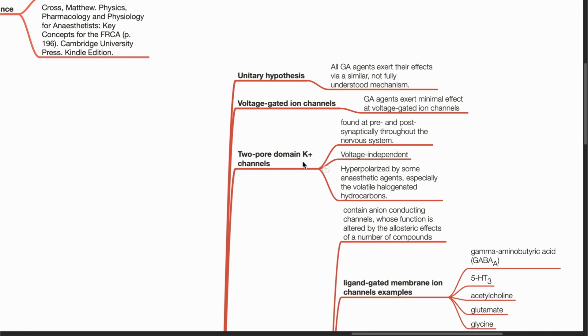Two-pore domain potassium channels are found pre- and post-synaptically throughout the nervous system. They are voltage-independent and are hyperpolarized by some anesthetic agents, especially the volatile halogenated hydrocarbons.